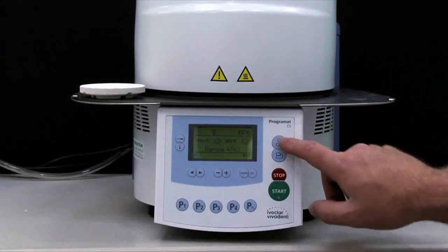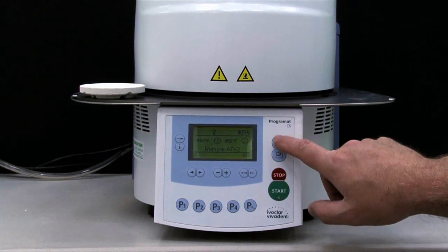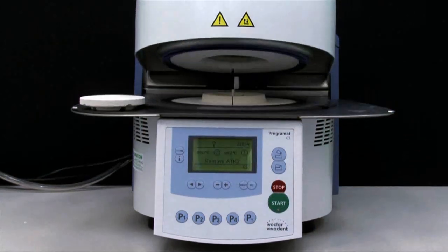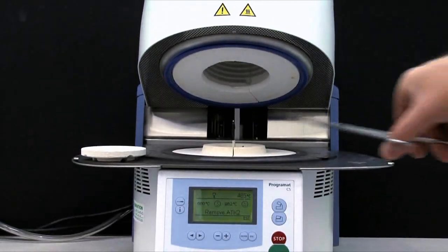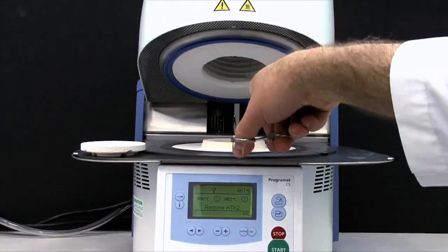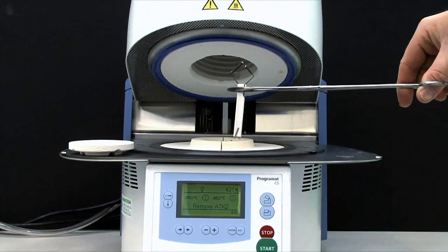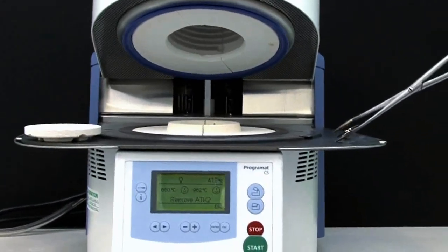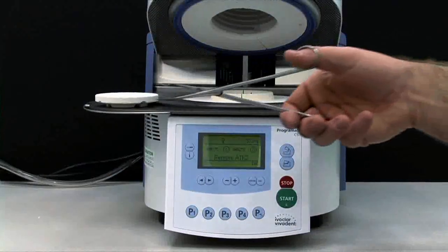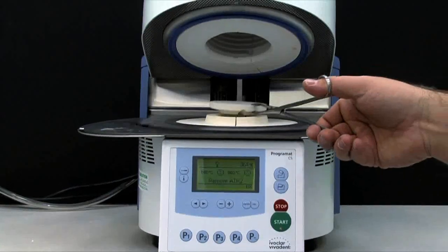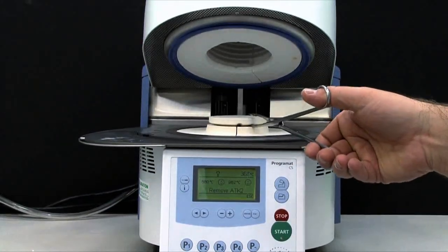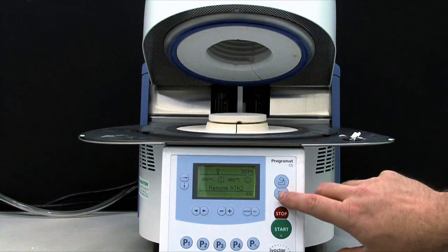At the end of the program, open the furnace head and remove the ATK2 with the furnace tongs and place it on the cooling tray to cool. Replace the firing plate and close the furnace head. Your Program CS is now calibrated and ready for use.